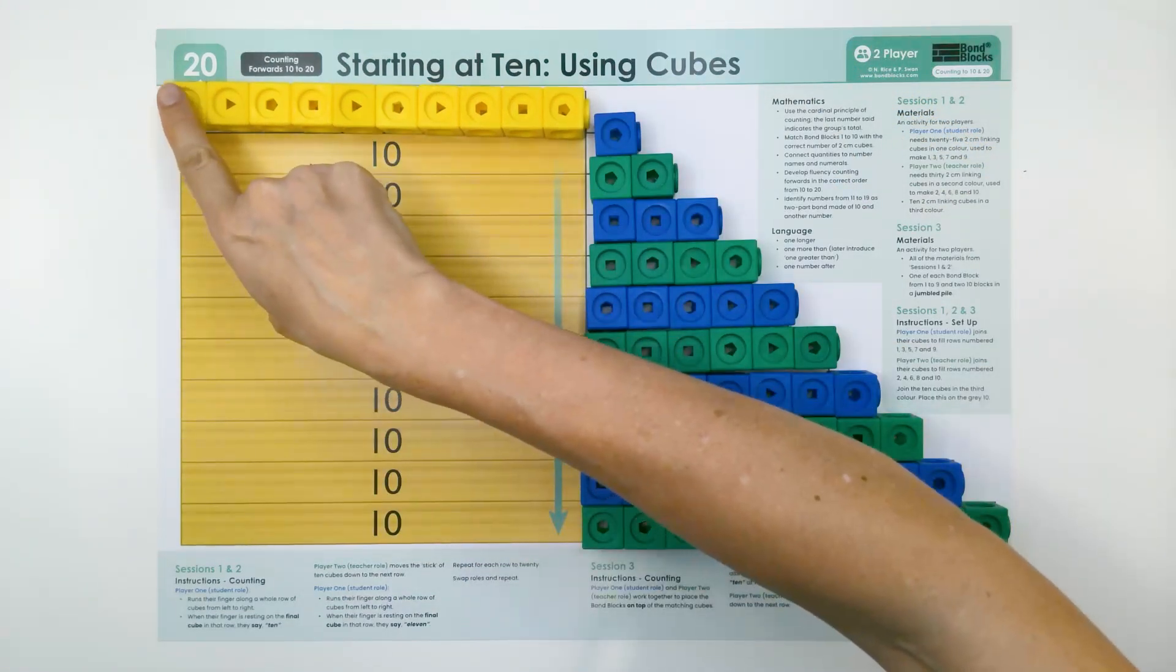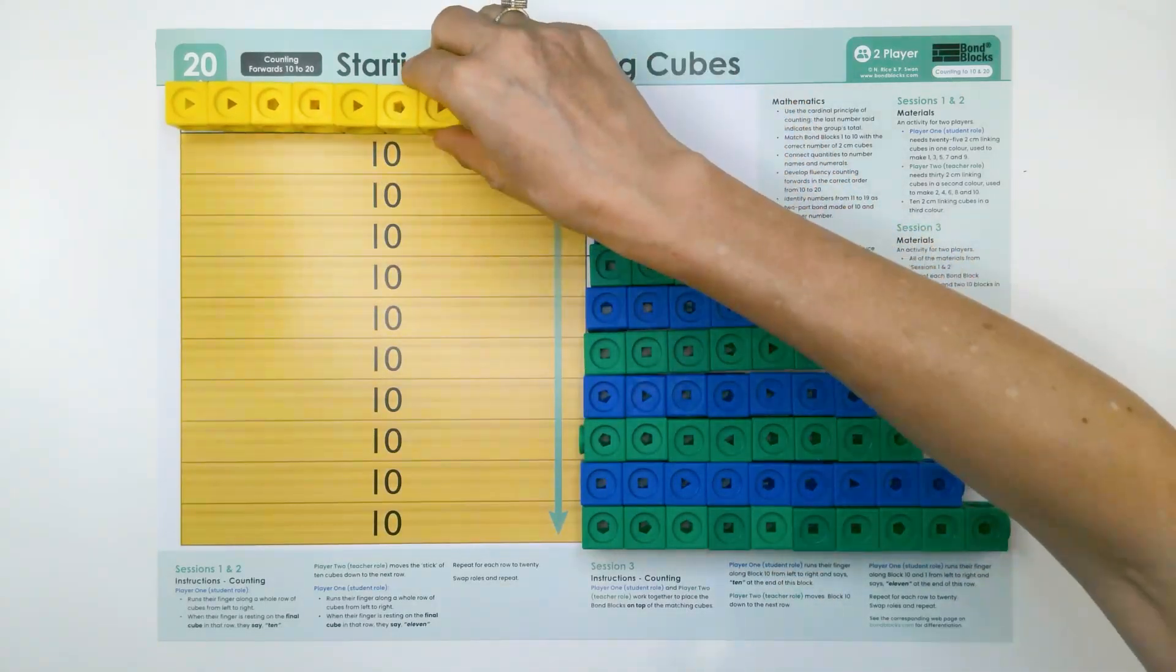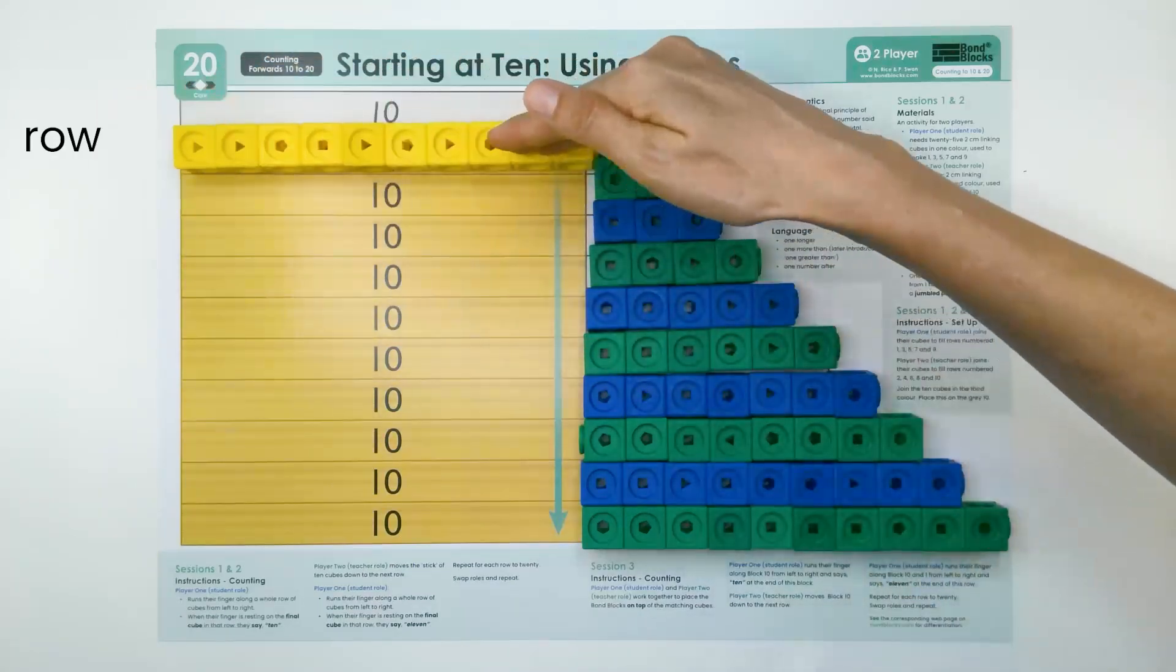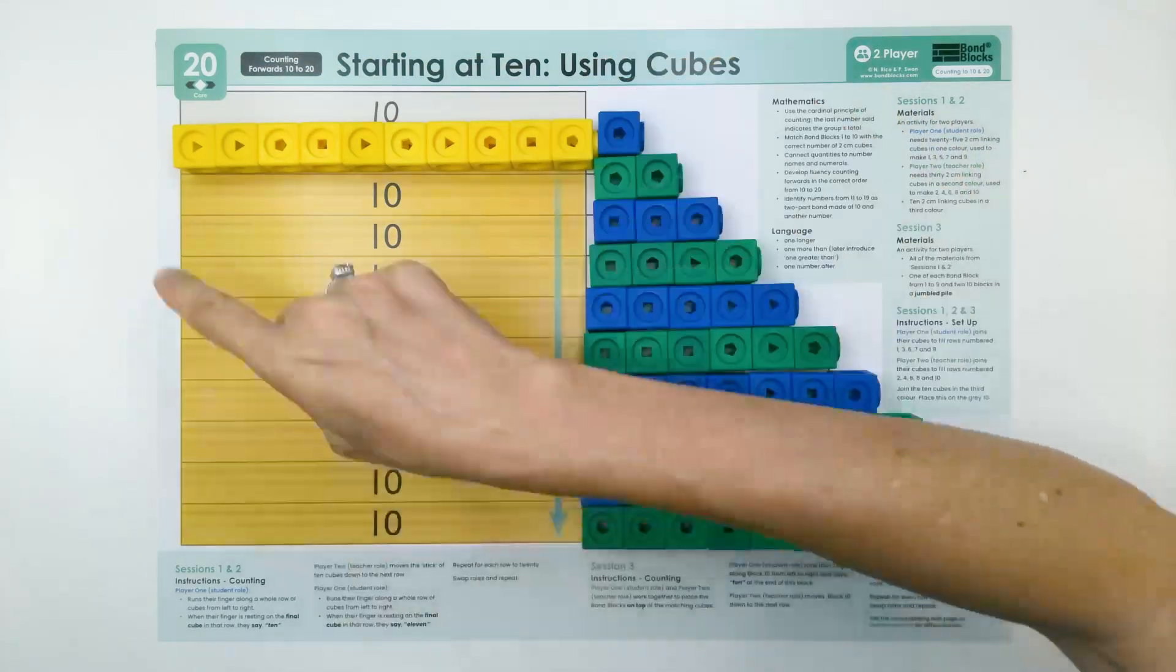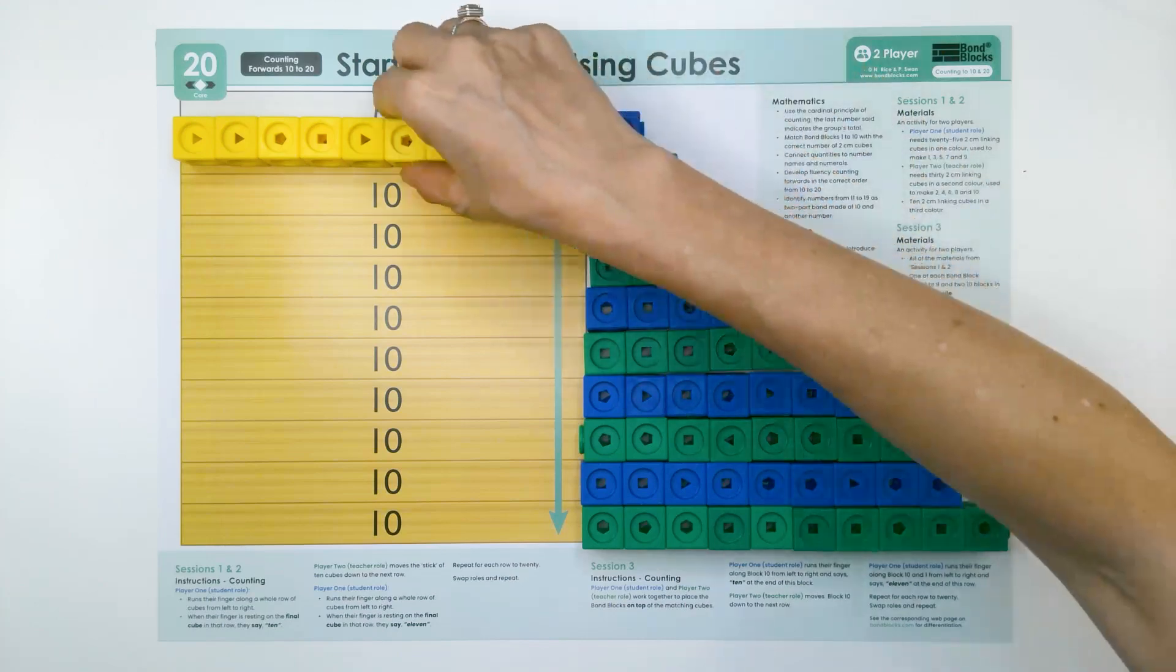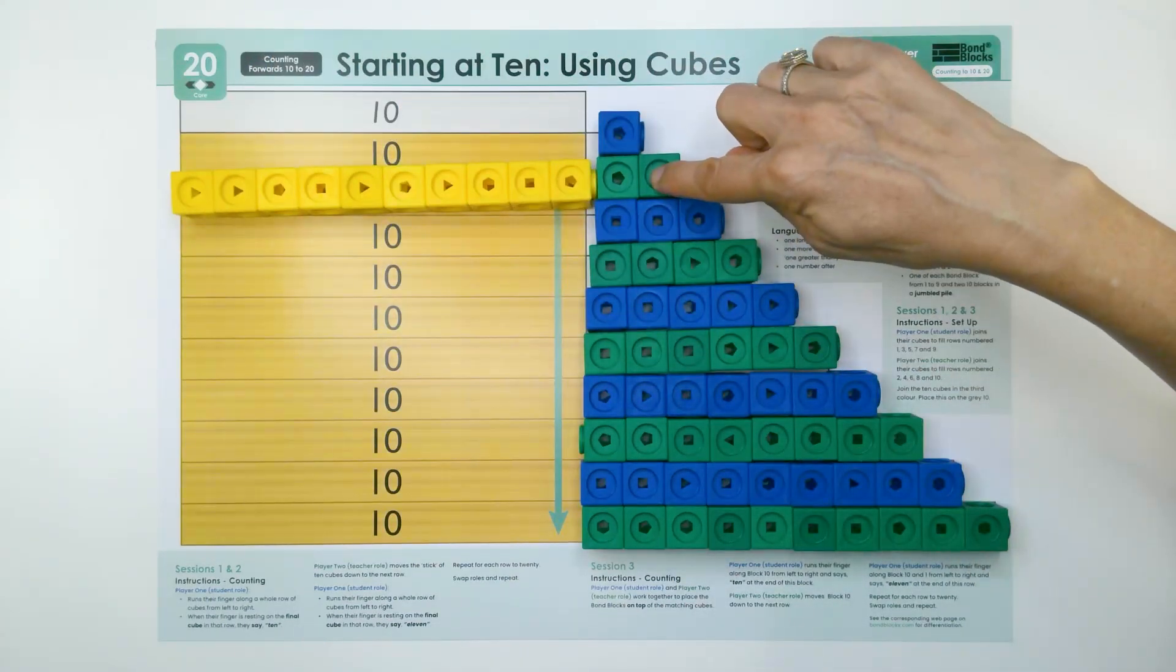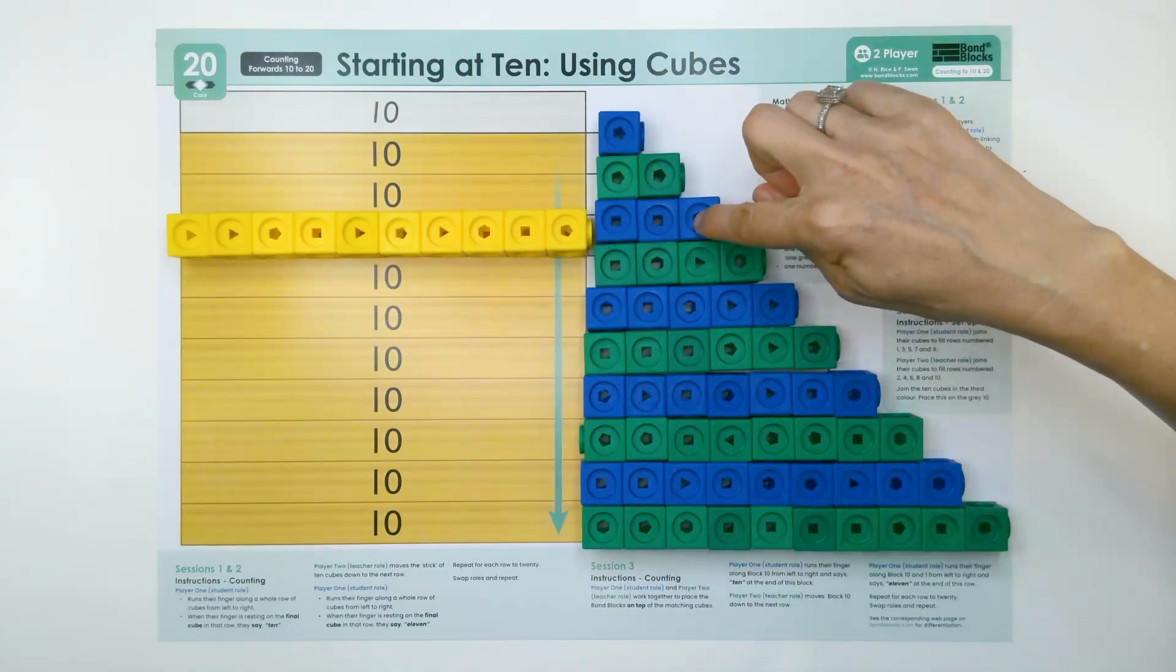I start at the first cube. 10. I move this down to the next row. The spaces going horizontally across are called rows. I put my finger at the start and say 11 when it's on the last cube. On the next row, 12. One more, 13.